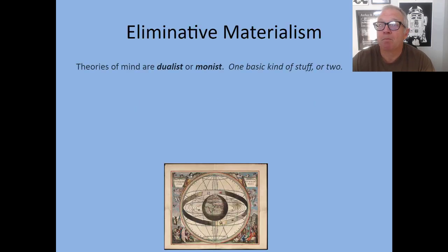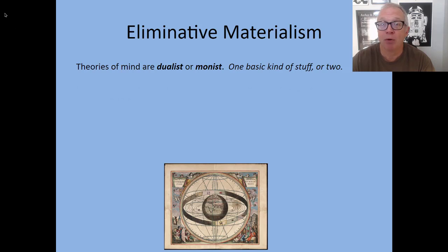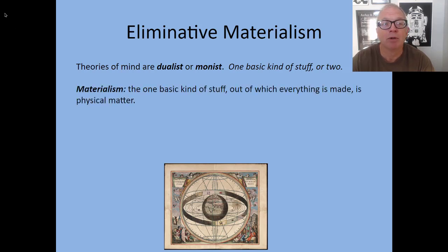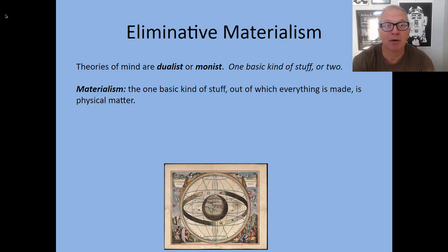Some background to tie us back to some of the theories we started with in the semester: we've already seen that theories of mind are typically dualist or monist. That is, they adopt the view that there are two basic kinds of stuff or one basic kind of stuff in the world. One of the monist views, obviously, is materialism — that is to say, only material stuff exists. So whatever minds are, whatever they're made of, must just be made of physical matter. That's materialism.